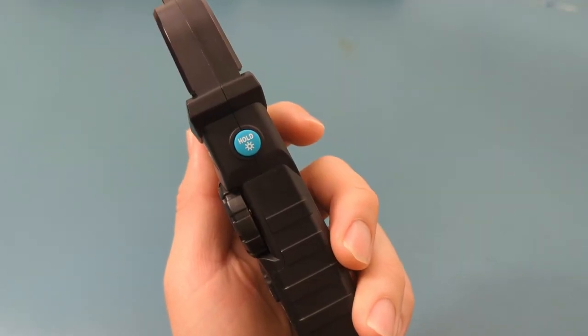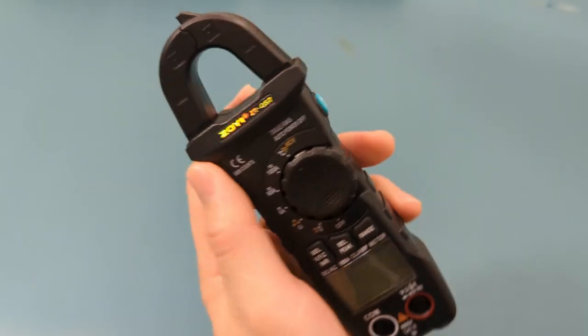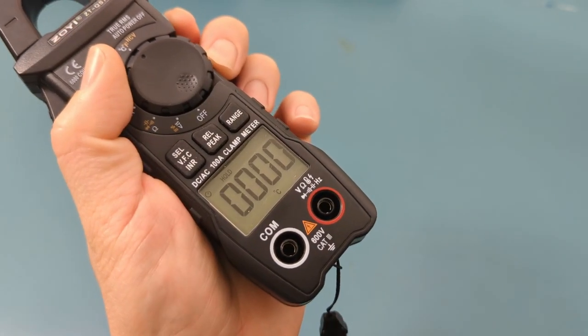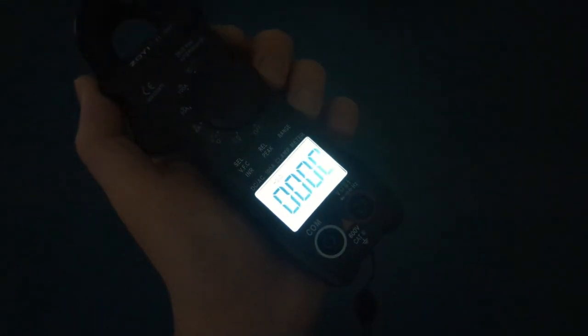On the right side of the meter is a blue button. If you press and hold this button, the backlight turns on. This is useful when working in low light conditions.